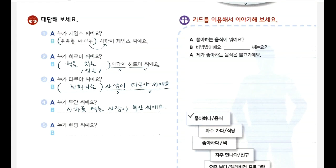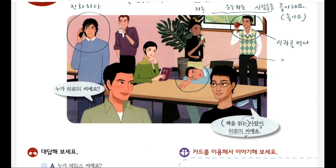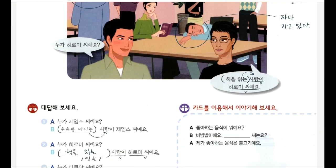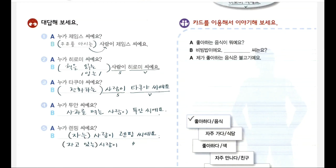Number five — 마지막: 누가 램핑 씨예요? 램핑 씨 자다. Easy version: 자는 사람이 램핑 씨예요. You can also emphasize the continuous: 자고 있다. Difficult version: 자고 있는 사람이 램핑 씨예요. Either 자는 사람이 or 자고 있는 사람이 is fine. 됐습니까?